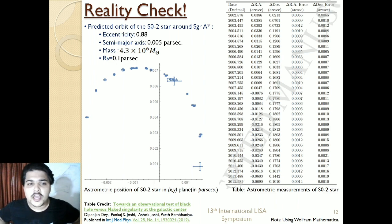Now we have the data of the S0-2 star around Sagittarius A*. The eccentricity is 0.88, the semi-major axis is 0.005 parsec, the mass is 4.3 times 10 to the power 6 solar masses. All the data are in solar mass, parsec, and for velocity it is kilometer per second. The table here shows the astrometric measurement of S0-2 star. I have used this table from the research paper shown over here, and this plot has been done in Wolfram Mathematica. This is our experimental data.